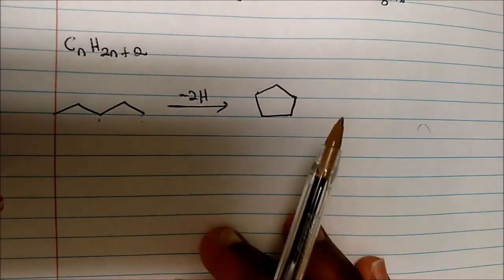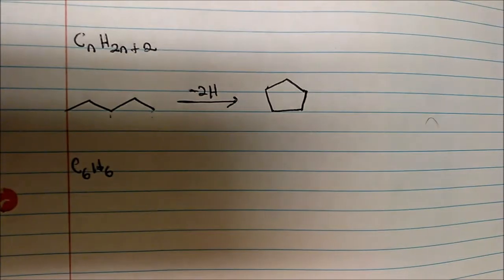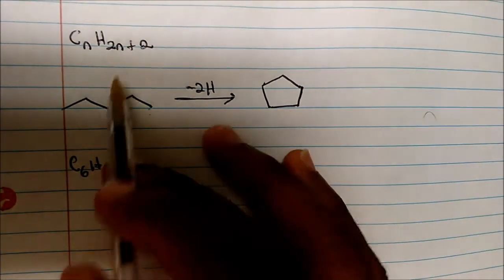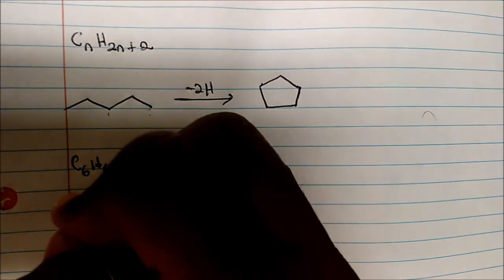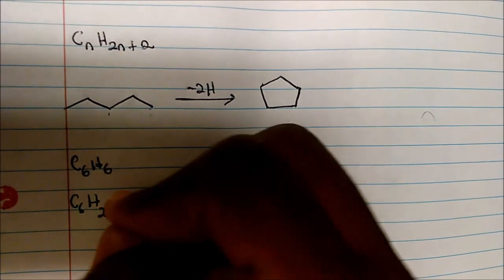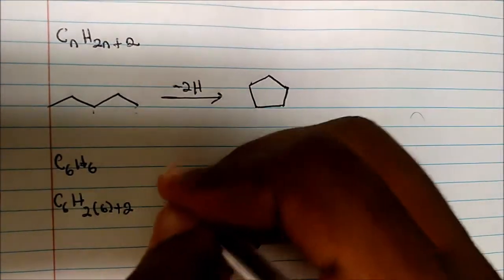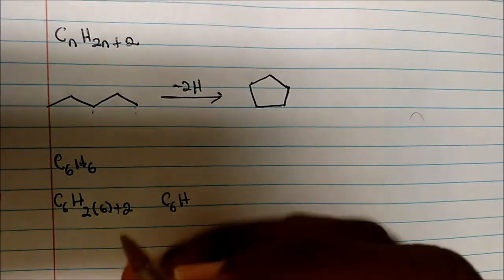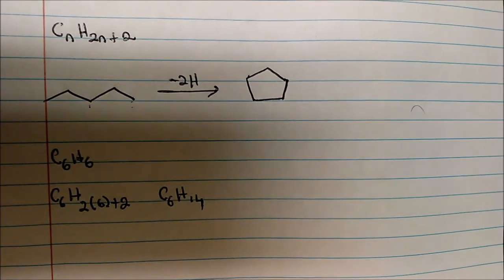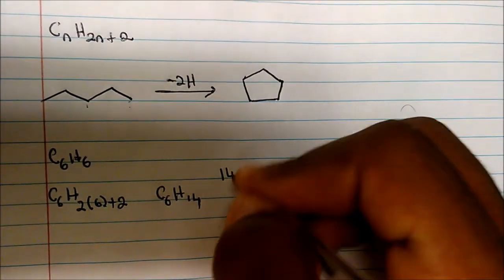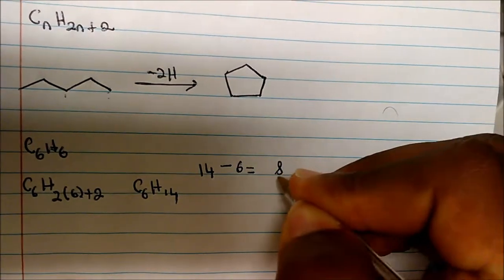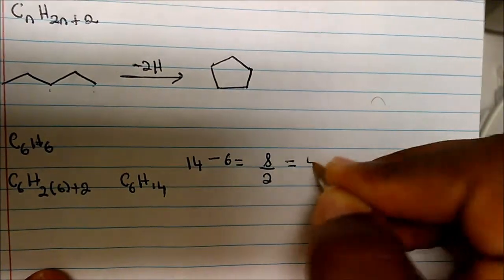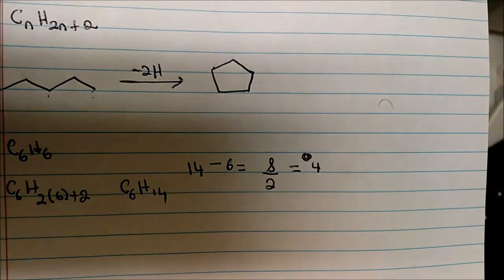Let's look at an example. Given the formula C6H6, calculate the degrees of unsaturation. Using the CnH2n+2 rule, the fully saturated formula would be C6H14 — because 2 times 6 plus 2 equals 14. Now subtract the actual number of hydrogens: 14 minus 6 equals 8.